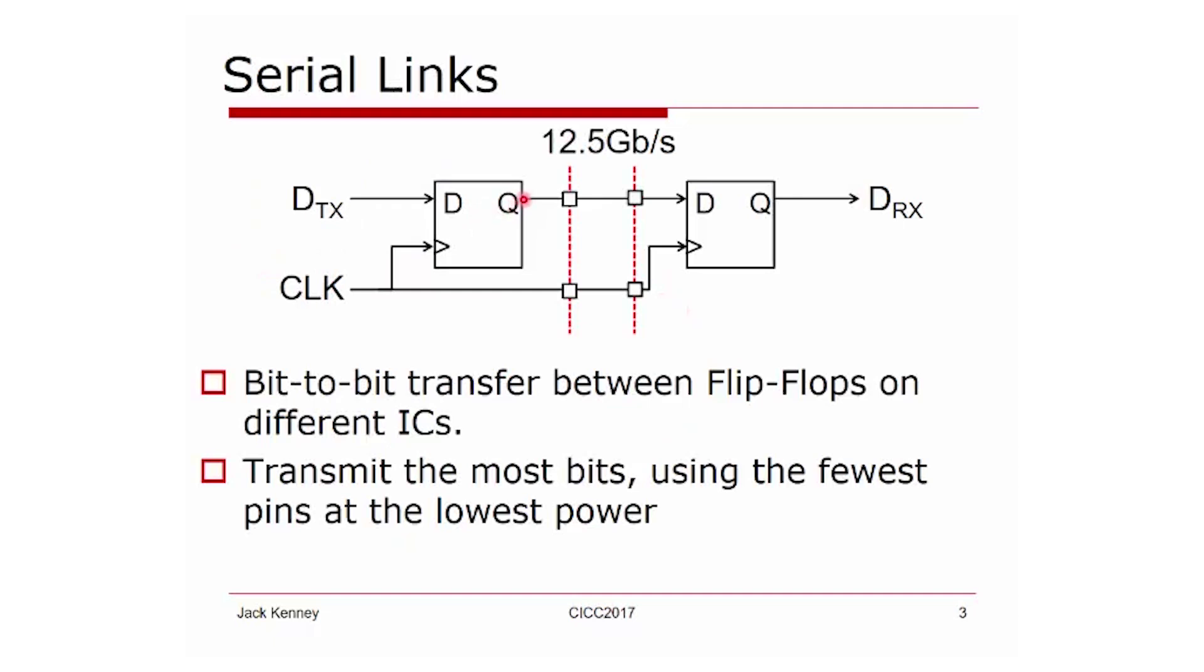The essence of serial links is a bit-to-bit transfer of data between flip-flops on different ICs. The goal is to transmit the most bits using the fewest pins at the lowest power and to get them all across that link correctly.